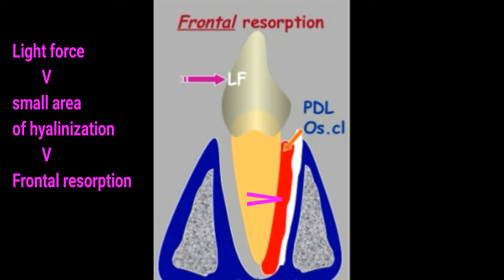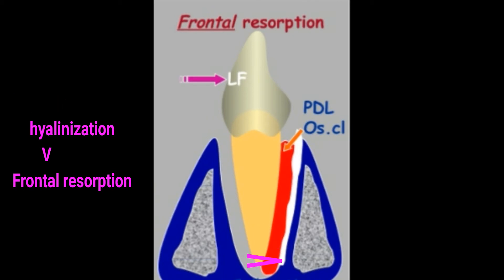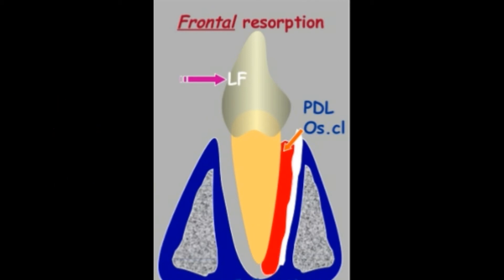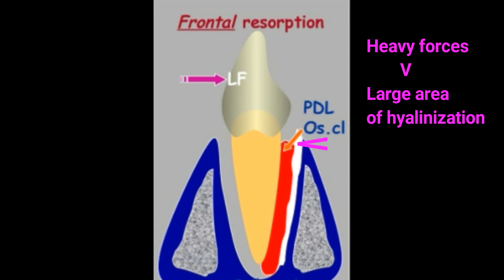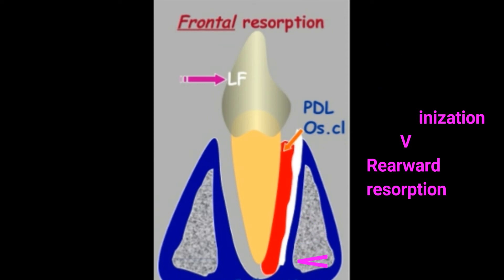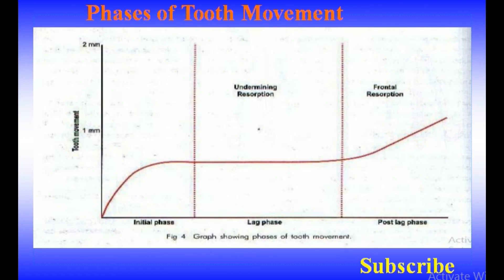If light forces are used, the area of hyalinization is small and frontal resorption occurs. If heavy forces are used, the area of hyalinization is large, resorption in this case is rearward, and a longer lag period occurs to eliminate the hyalinized tissue.